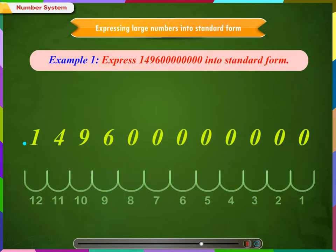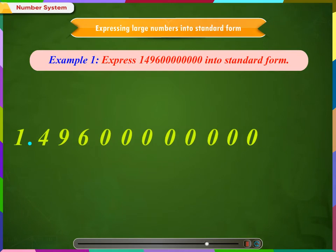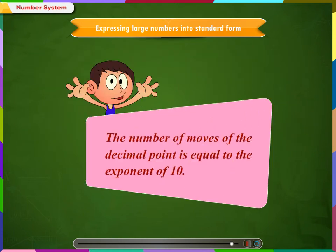We subtract 12 minus 1, which is 11, and put the point there. Now, since we have moved 11 times to the left, therefore, multiply the number by 10 raised to 11. Thus, the standard form of the number will be 1.4 into 10 raised to 11. Remember, the number of moves of the decimal point is equal to the exponent of 10.